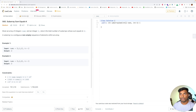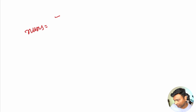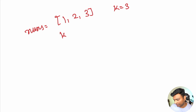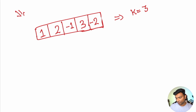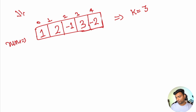In example 2, the array is [1, 2, 3] and k is 3, so the output is 2. One subarray is [1, 2] with sum 3, and the other is [3] alone. Now for example 3, the array is [1, 2, -1, 3, -2] with indices 0 through 4, and k is 3.